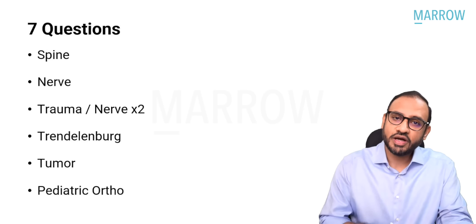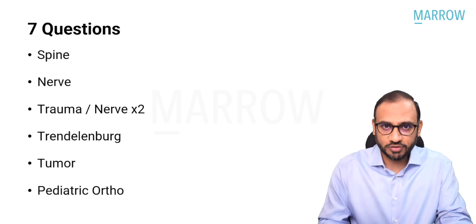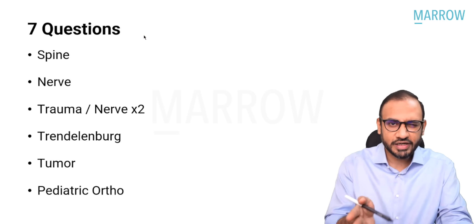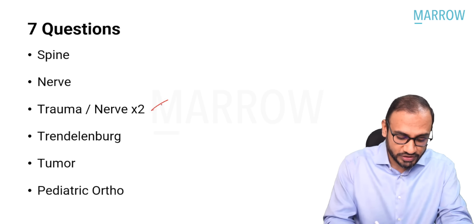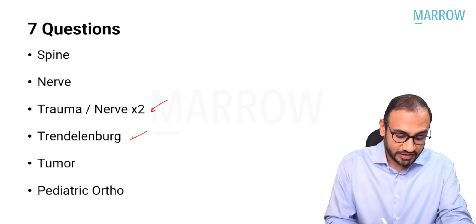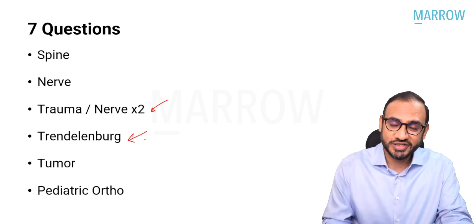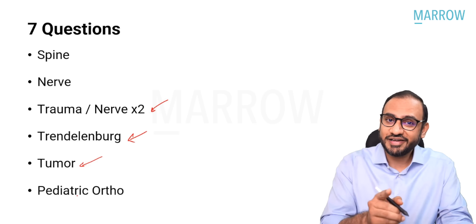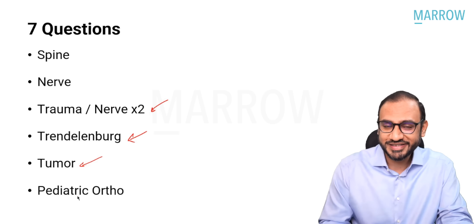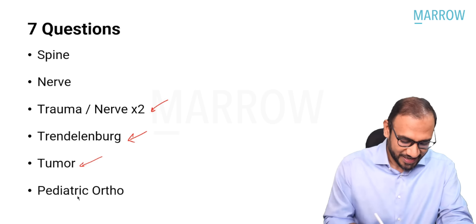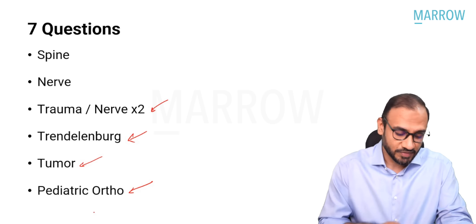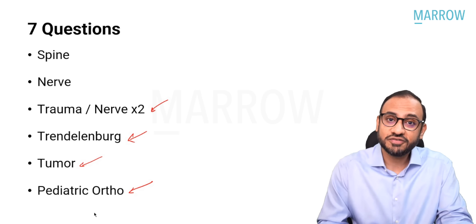In session one, the morning session, there were roughly seven questions from orthopedics. They were divided into spine, nerve, and trauma — nerve injuries had overlap and two questions came from that. We had a Trendelenburg test question asked again in the evening session, one question from tumors — no points in guessing, it was Giant Cell Tumor — and one question from pediatric orthopedics in both morning and evening sessions.